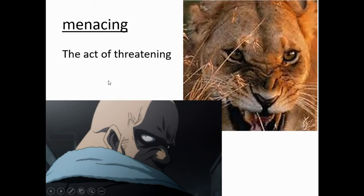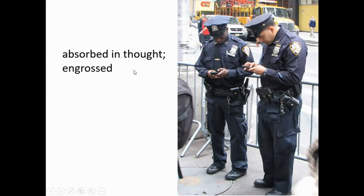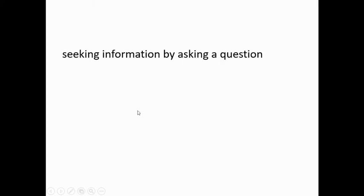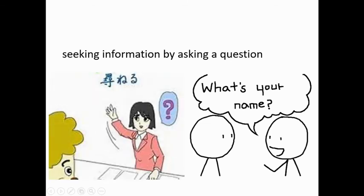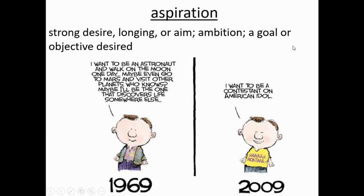Menacing: the act of threatening. Preoccupied: absorbed in thought; engrossed. Seeking information by asking a question. Aspiration: strong desire, longing or aim; ambition; a goal or objective desired. This cartoon — 1969: 'I want to be an astronaut and walk on the moon one day. Maybe even go to Mars and visit other planets. Maybe I'll be the one that discovers life somewhere else.' 2009: 'I want to be a contestant on American Idol.' So just the differences in ambitions and goals.